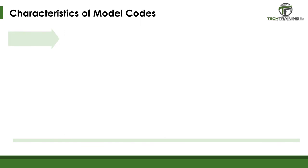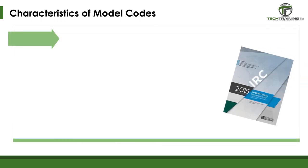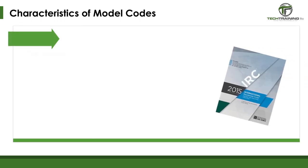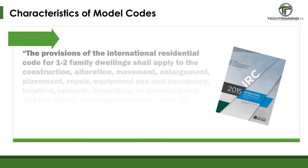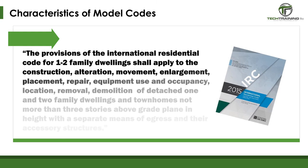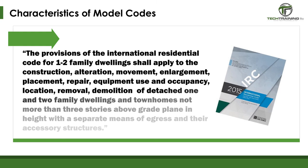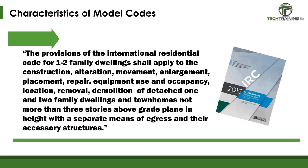Instead of each jurisdiction writing their own code, the system allows building officials from around the country to get together, write and update codes. Ideally, these codes are written in a public, democratic, consensus process, where there is transparency and prevention of dominance from one specific group or jurisdiction. Let's take a look at the characteristics of a model code. While model codes vary in style, approach, and layout, they generally share several common characteristics.